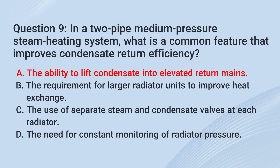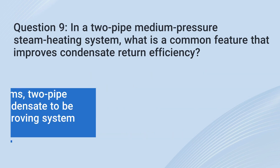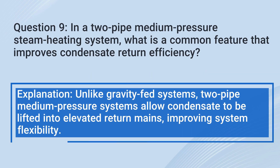The correct answer is A. The ability to lift condensate into elevated return mains. Unlike gravity-fed systems, two-pipe medium-pressure systems allow condensate to be lifted into elevated return mains, improving system flexibility.